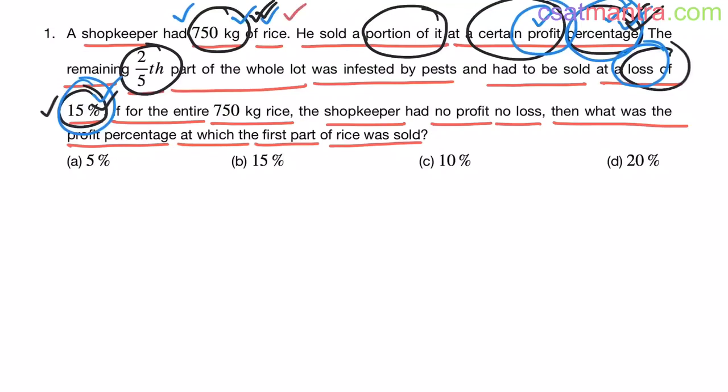Most of the aspirants have this confusion. Cost price is not given. So, what to choose? What if I choose 10 rupees per kg? What if I choose 100 rupees per kg? Will the values be different? No, my friends. No matter what you choose, the percentage is going to remain same.